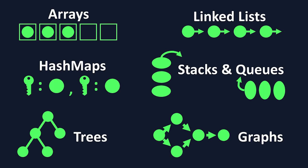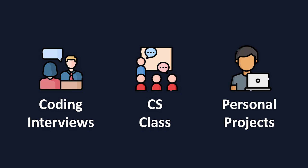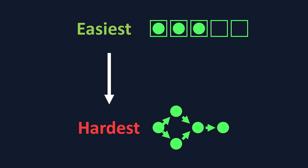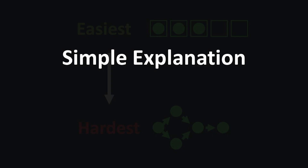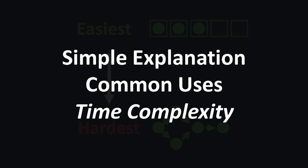Today we're going to be going through the 7 most important data structures and explaining them as simply as possible. These are extremely important to learn, whether it's for coding interviews, computer science class, or building projects. We'll be going through the list from easiest to hardest, so beginners have a better idea of where to begin. We'll go over a simplified explanation for what each data structure is and talk about common uses. I'll also be putting the time complexity for common operations on screen, but if you don't know what that is, don't worry — I'm just including it for the people who want to see it. Let's get right into it with our first data structure.